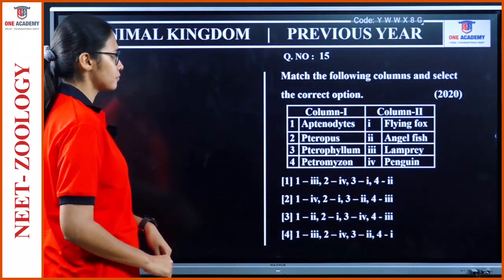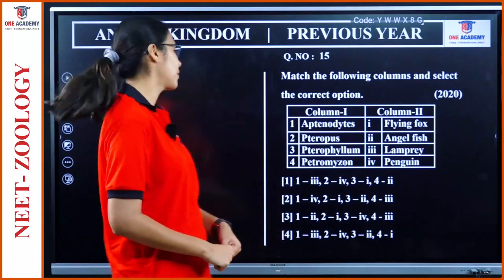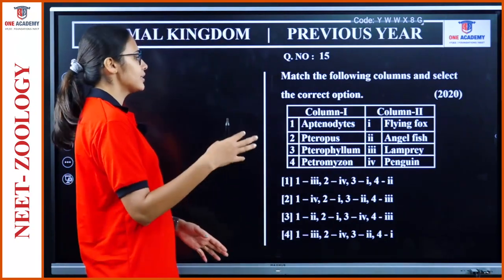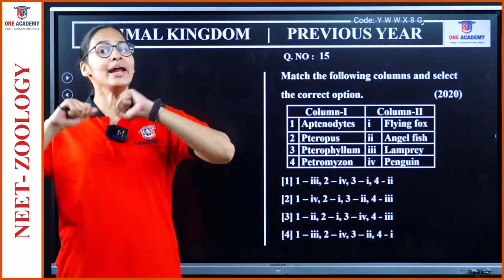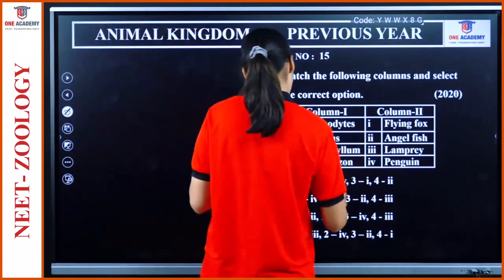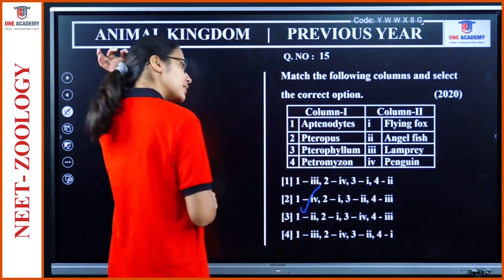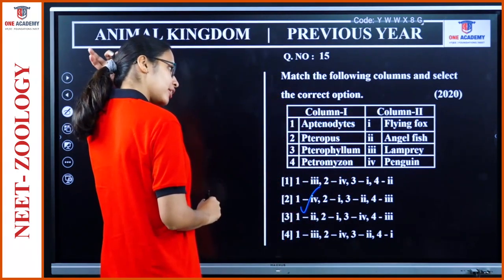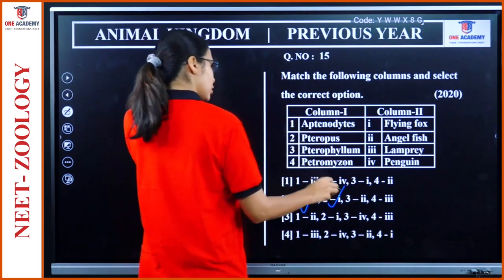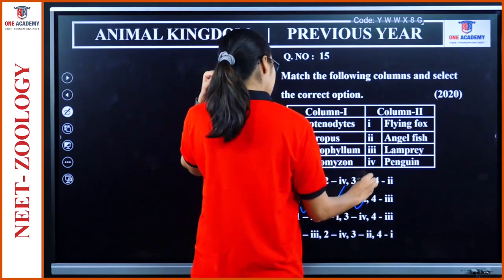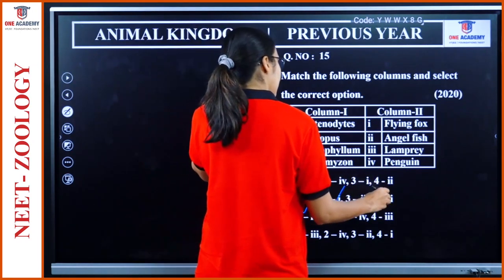Question 15: Match the following for scientific and common names. Archaeopteryx — 1-4. Pteropus — flying fox — 2-1. Pterophyllum — angelfish — 3-2. Petromyzon — lamprey — 4-3. Option 2 is the right answer.